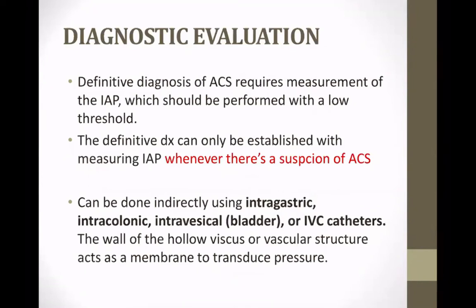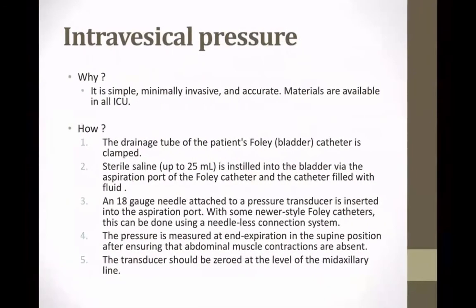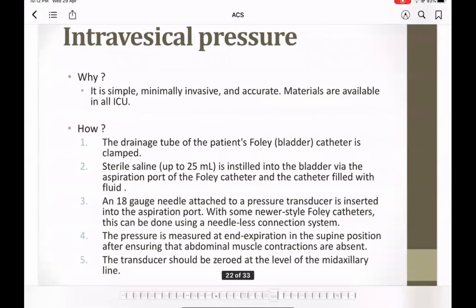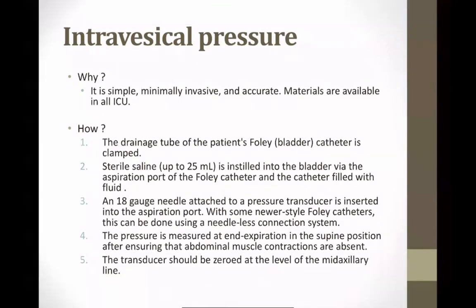Diagnosis should be based on your clinical sense, and whenever you suspect ACS you should measure the intra-abdominal pressure. This can be done through different methods: intra-gastric, intra-colonic, intra-vesicular (catheter in the bladder), or IVC catheter. The most common and simplest method is the intra-bladder catheter — materials are available in every ICU, it's affordable and least invasive, and it actually reflects the exact intra-abdominal pressure compared to other methods.